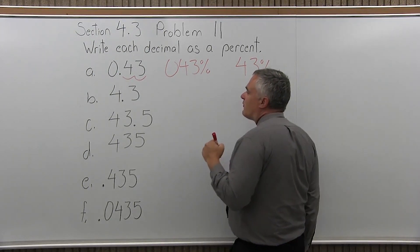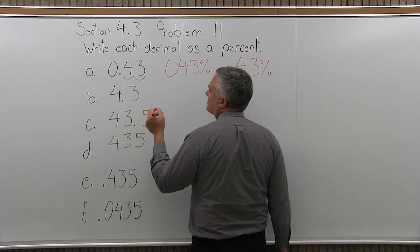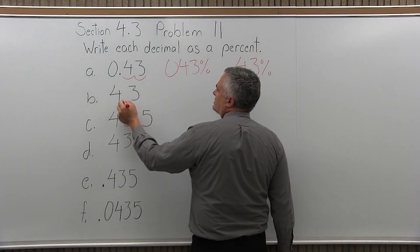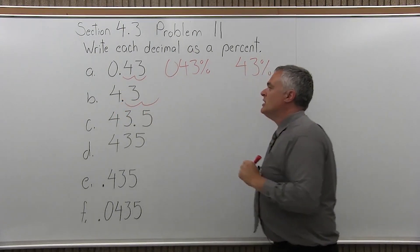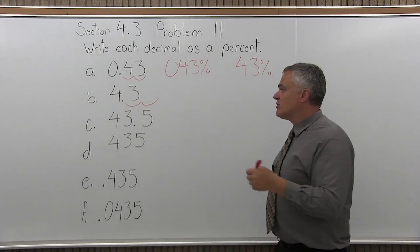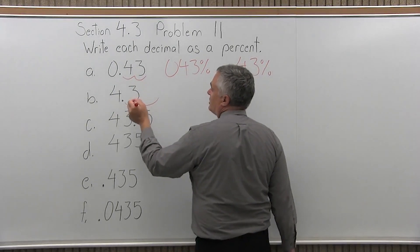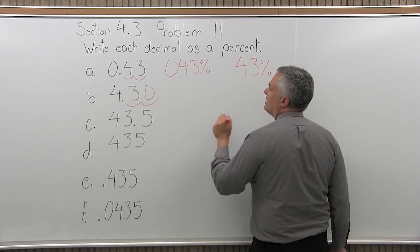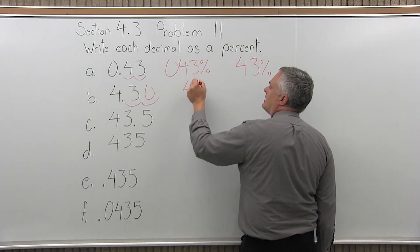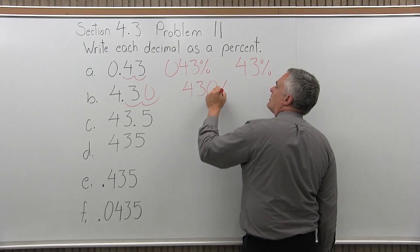Part B is 4.3, write that as a percent. Take the decimal where it's written, between the four and the three, and move it two positions to the right. One position comes after the three, then you've run out of room, but you go another position and create a blank spot which you fill in with a zero. So 4.3 as a percent is 430%.